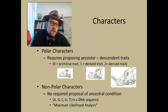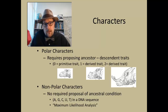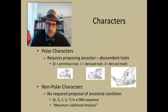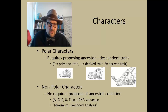If taxa have the more derived condition, we can assign more advanced numbers — one, two, three, four, and so on. You can also specify whether it is directional: did they have to go from zero to one and one to two, or could they jump from zero to two in one of those traits?